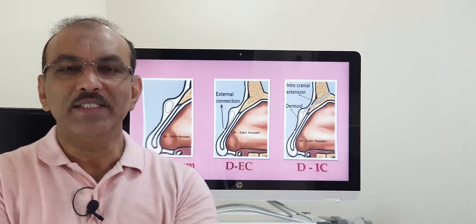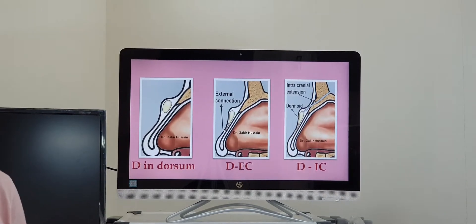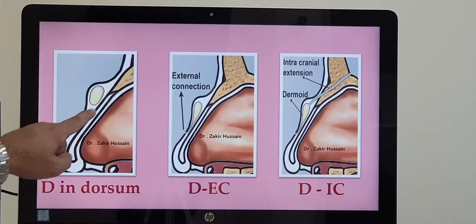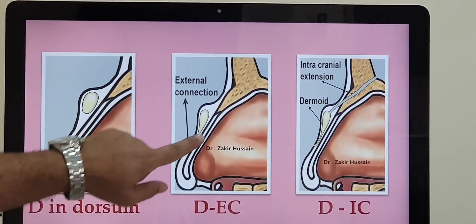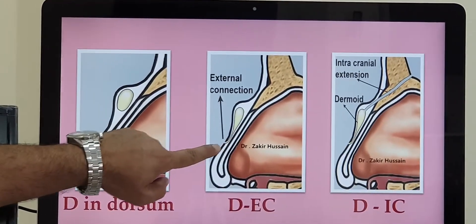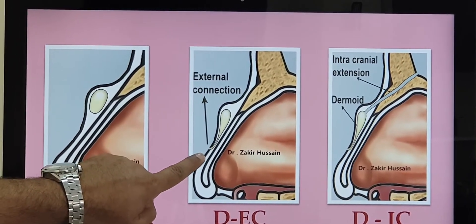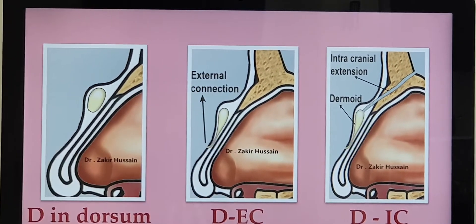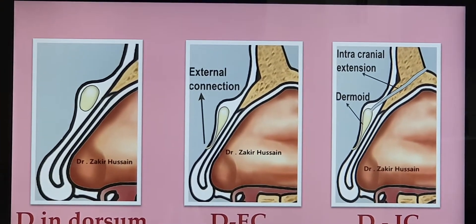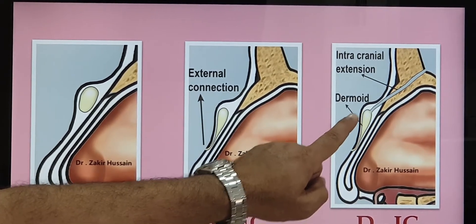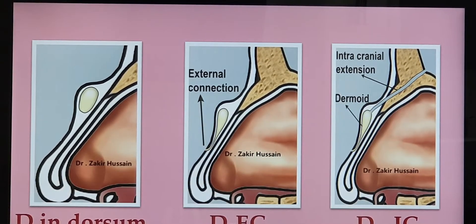Now, this cyst — you have dermoid cyst, you have three varieties. The first one, where it is confined only to the nose. The second one, where it has got an external connection. The third variety, where the dermoid cyst has got an intracranial connection. So you have three varieties in that.